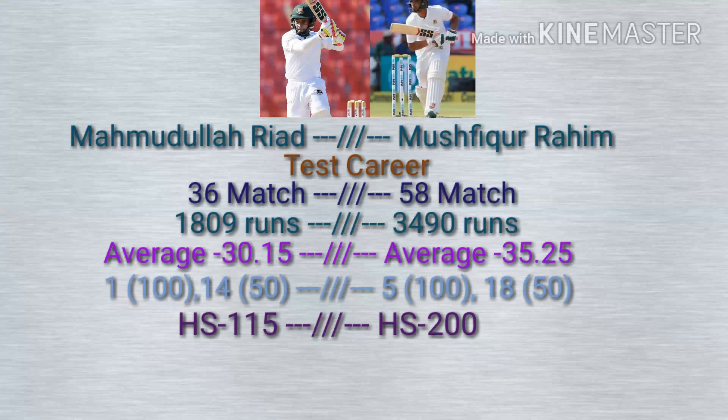It's time for the T20 career. Mushfiqur Rahim played 65 T20 matches; Mahmoudullah Riyadh played 58 T20 matches. Mahmoudullah Riyadh gained 810 runs. The average of Mushfiqur Rahim is 19.21 and Mahmoudullah Riyadh is 20.25. Mahmoudullah Riyadh smashed 3 half-centuries.